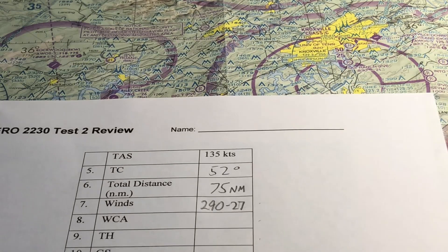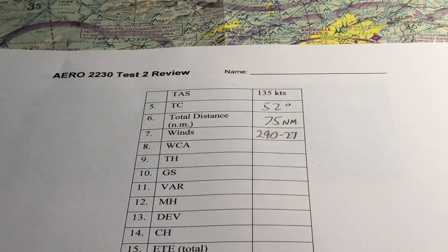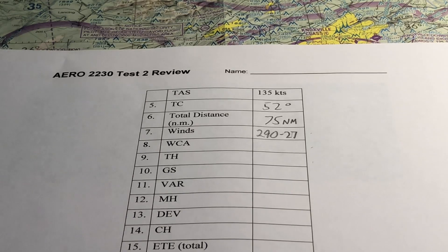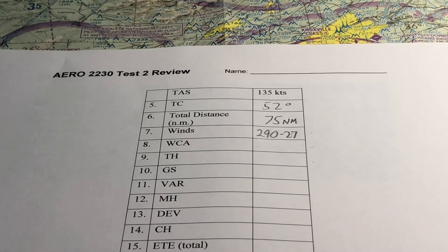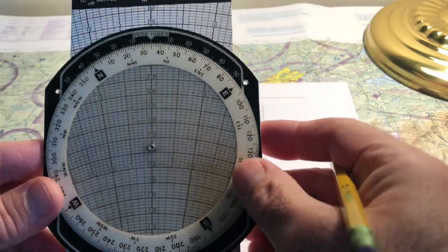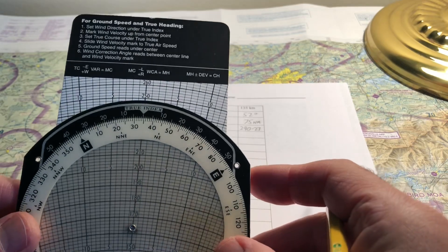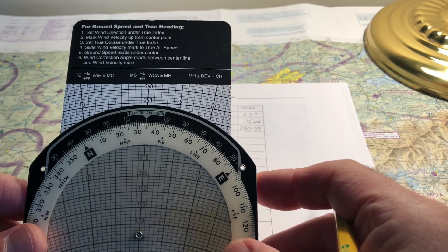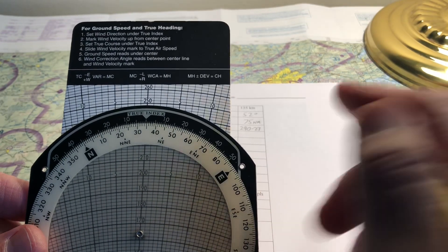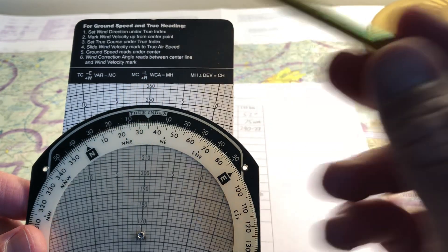Now we need to calculate the wind correction angle and the true heading. And we do that using the wind side of the E6B. So the great thing about the E6B is that it has step-by-step instructions at the top. So you can see the first instruction is set the wind direction under the true index.